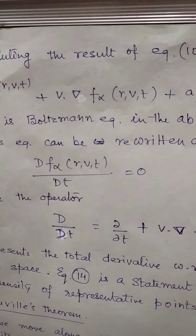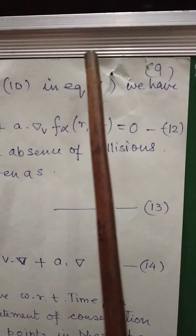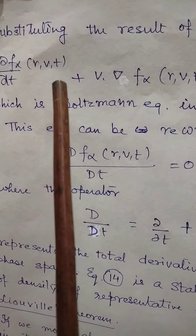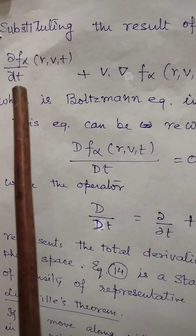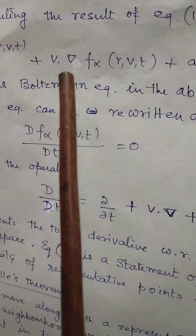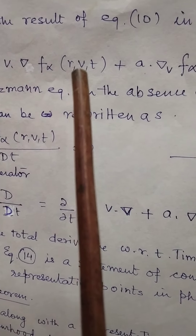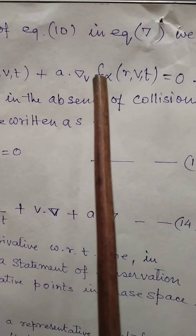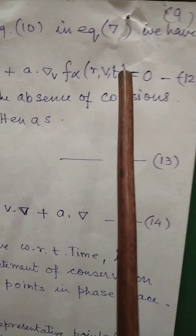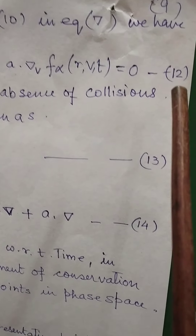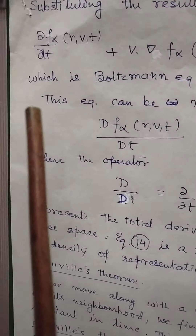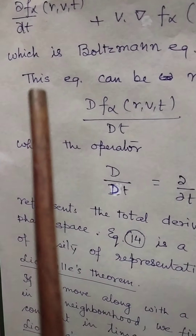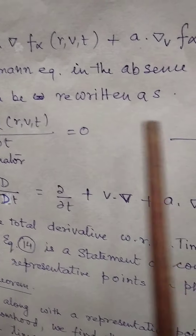Substituting the result of equation 10 into equation 7, we have: ∂f_alpha(r, v, t)/∂t + v·∇f_alpha(r, v, t) + a·∇_v f_alpha(r, v, t) = 0. Let it be equation number 12, which is the Boltzmann equation in the absence of collisions.